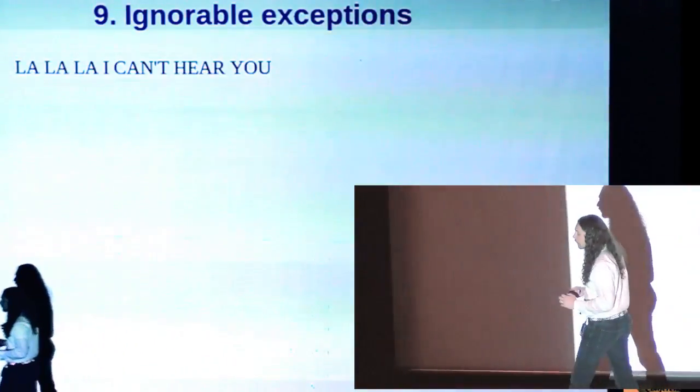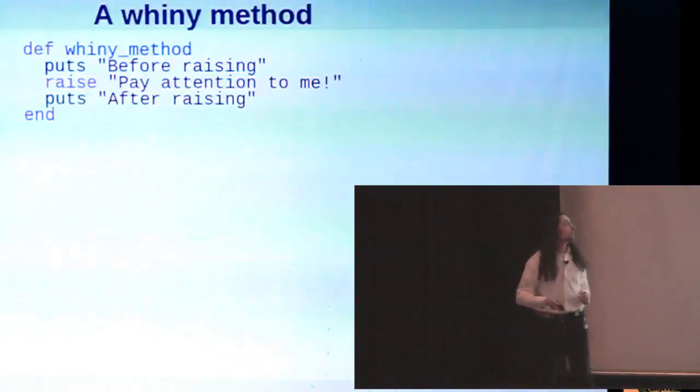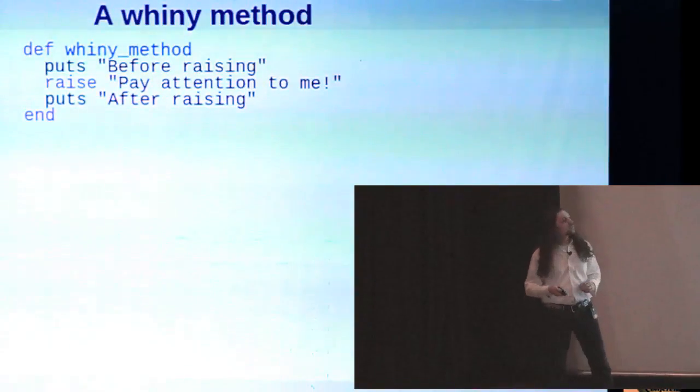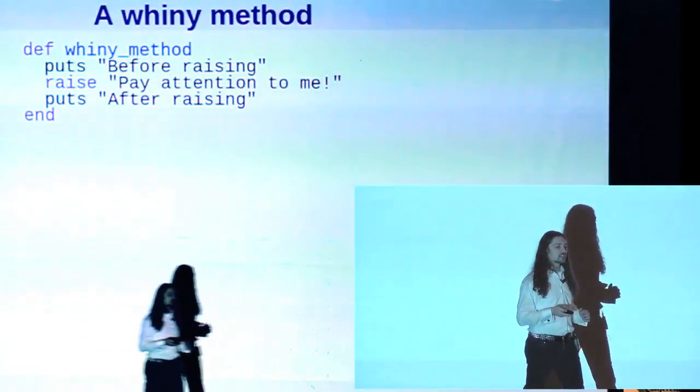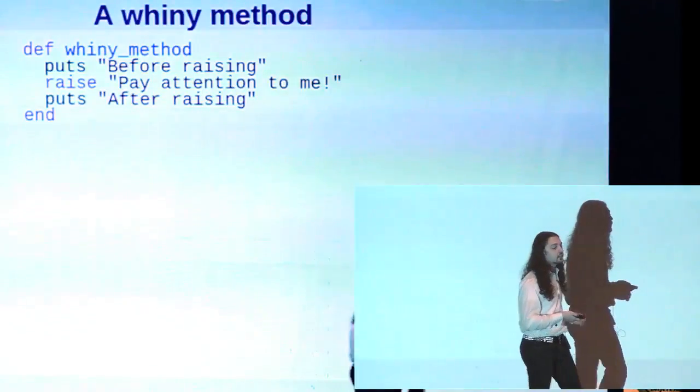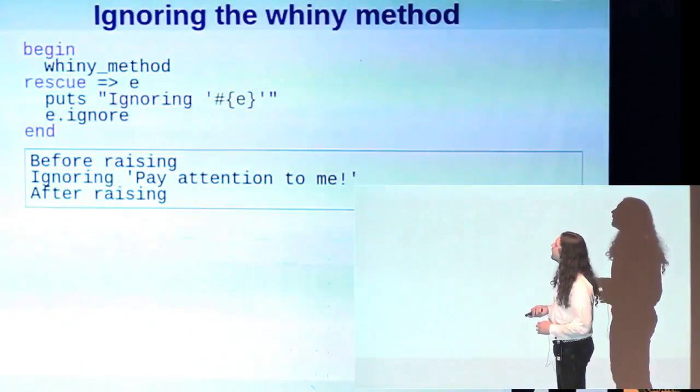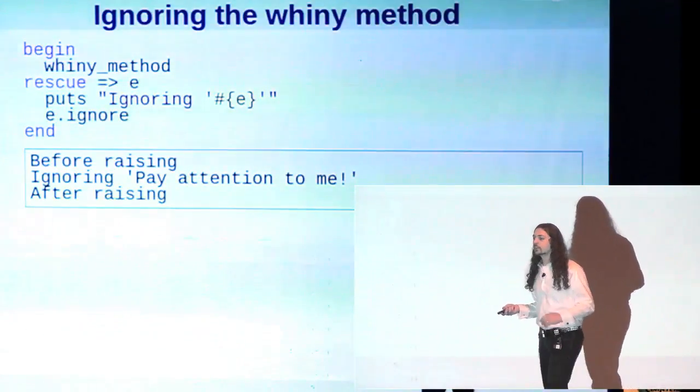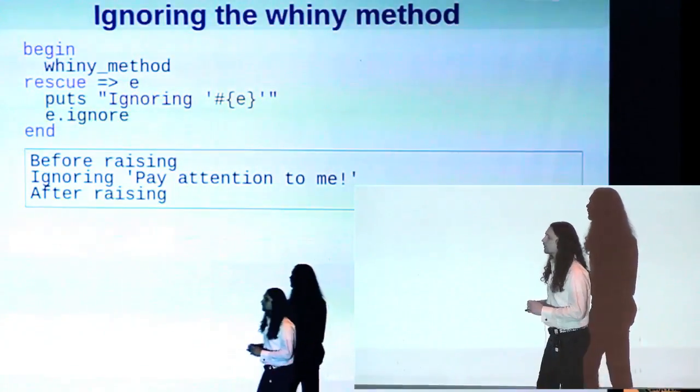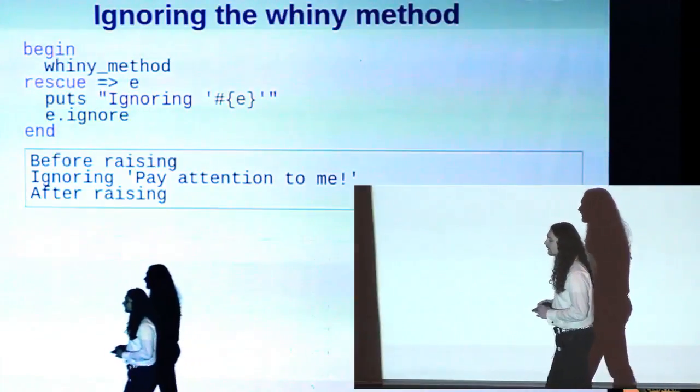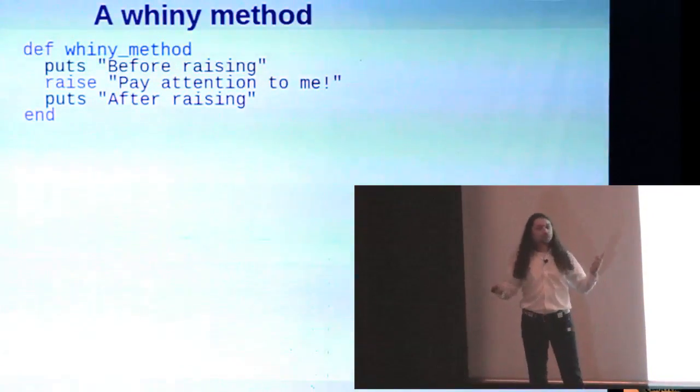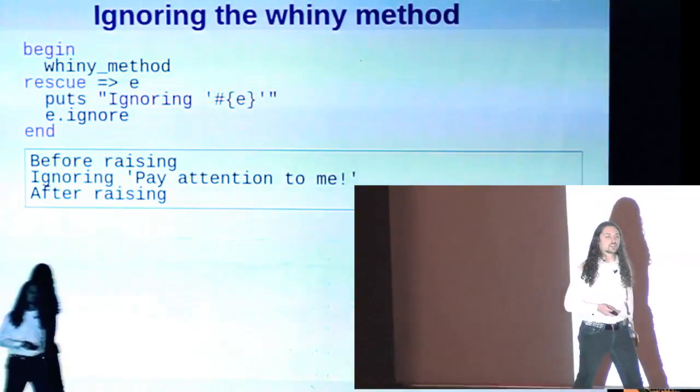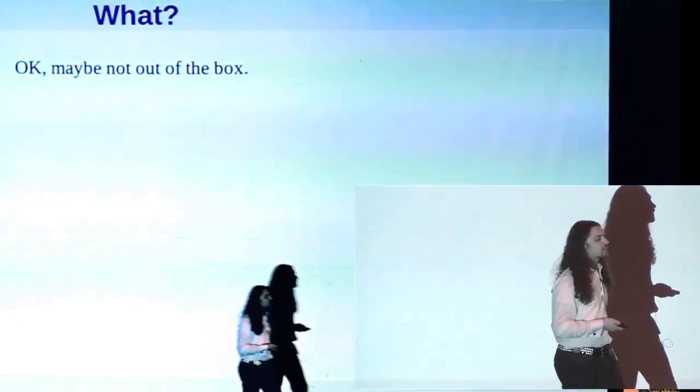So in Ruby, if you really don't like an exception, you can just ignore it. Here's a whiny method that raises an exception, and it's a stupid exception. We don't really care about it. So what we'll do is we'll say, call the whiny method and rescue the exception, and then when we rescue it, we'll just call ignore on it. And what you can see is that, remember we defined this with before raising and then after raising. After raising should never be hit, right? Because we raised an exception there. Well, actually, it is hit because we decided to ignore the exception.